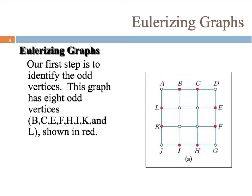Here's the example: Eulerizing graphs. First, let's identify the odd vertices. In this graph, they're already marked in red. There are eight odd vertices — that's way too many. There's no way a circuit or a path is possible. The odd vertices are B, C, L, E, K, F, I, and H.